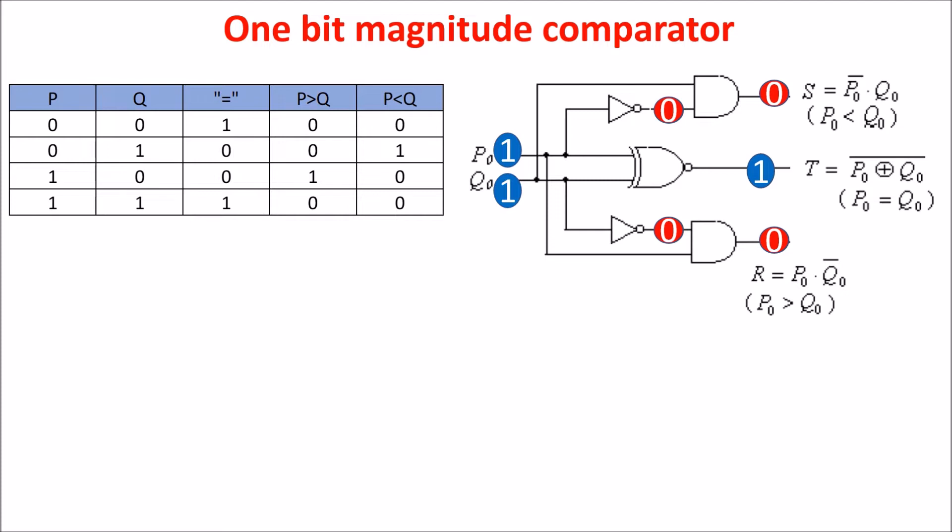If we now put a zero in the Q input then on the output of the XNOR gate we get a zero because the two inputs are different and on the output of the inverter there is now a one changing the output of the AND gate at one.